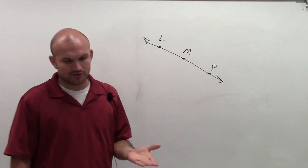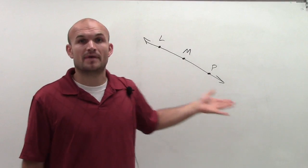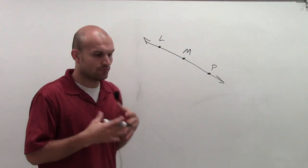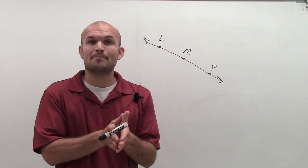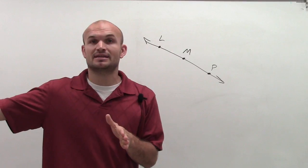But what we want to do is we want to label the rays that are contained in this figure. Remember, a ray is a portion of a line that has an endpoint, but then continues infinitely in one direction.